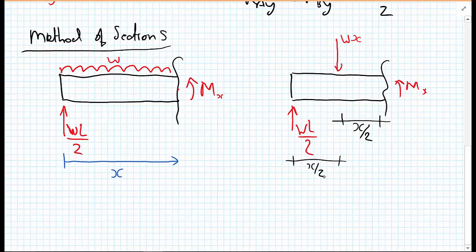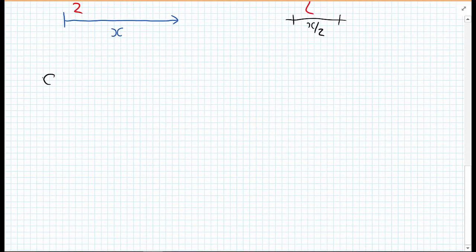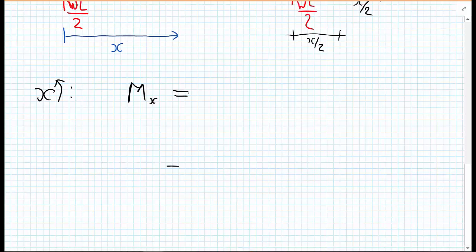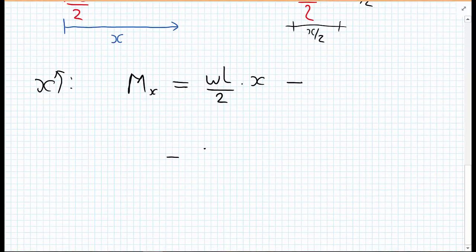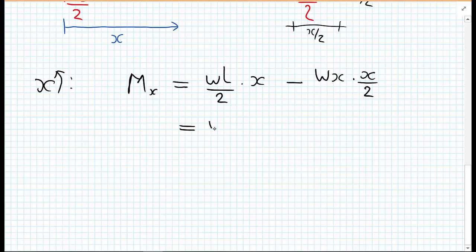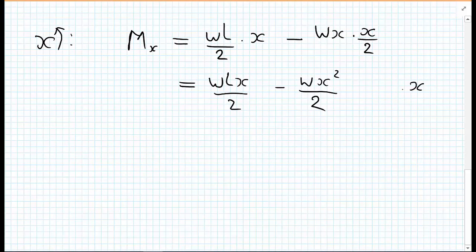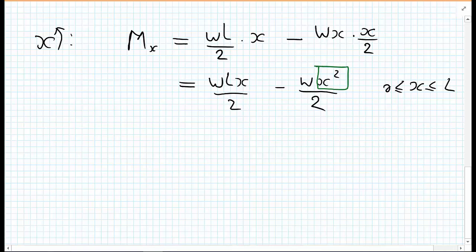Taking moments about x: M(x) = (wL/2)·x − w·x·(x/2). Tidying up, we get M(x) = wLx/2 − wx²/2, applicable for x between 0 and L. The first thing to notice is that we have a term in x², so this function is quadratic.